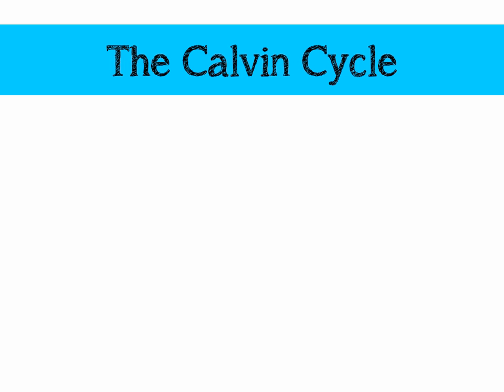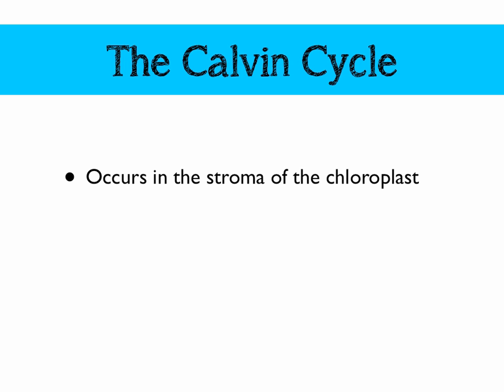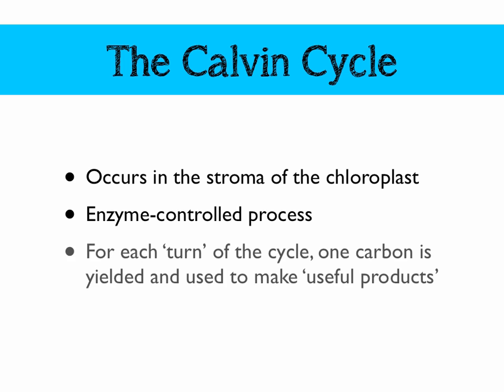The Calvin cycle occurs in the stroma — the enzyme-filled gooey soup of the chloroplast — and it's an enzyme-controlled process. For each turn of the cycle, we get one carbon yielded, and that is what we use to build up and synthesize useful products, which we'll talk about a little bit later.